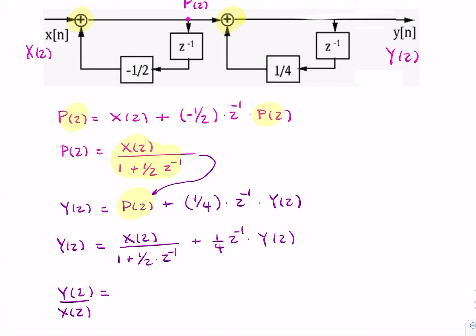y(z) over x(z) is simply 1 over 1 plus half z to the minus 1, all over 1 minus a quarter z to the minus 1.